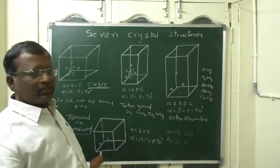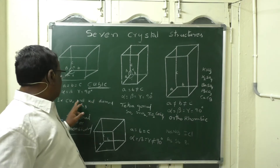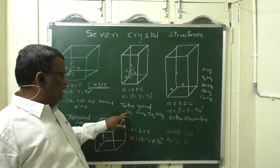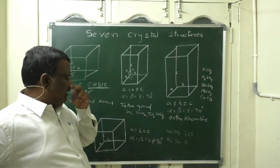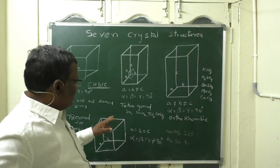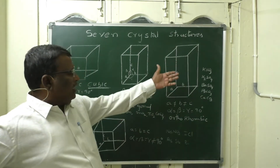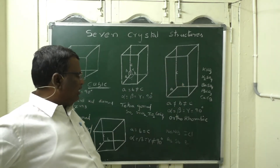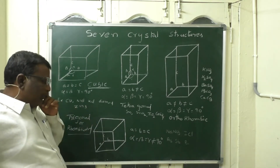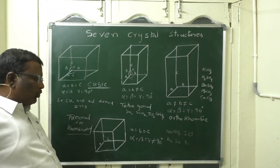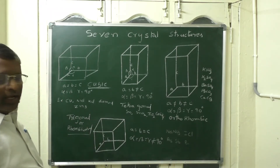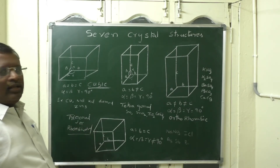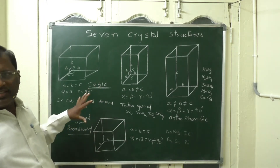Examples for cubic structures are copper, sodium chloride, potassium chloride, diamond, and zinc sulphide. For tetragonal: tin, tin oxide, titanium oxide, and calcium sulfate. For orthorhombic: KNO₃, K₂SO₄, BaSO₄, PbCO₃, and AgCO₃. For rhombohedral: sodium nitrate, iodine chloride, arsenic, antimony, and bismuth — which are group 15 elements.